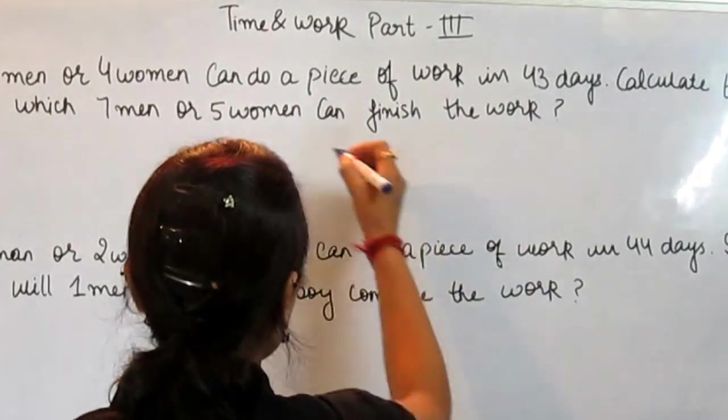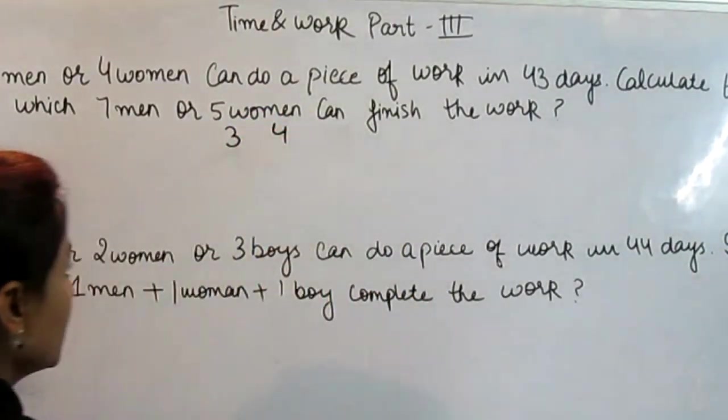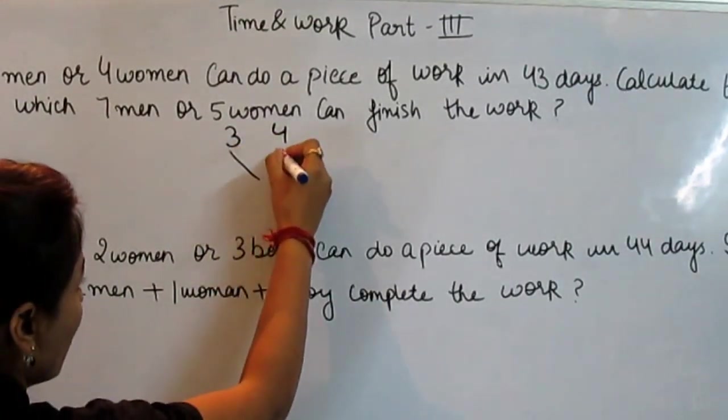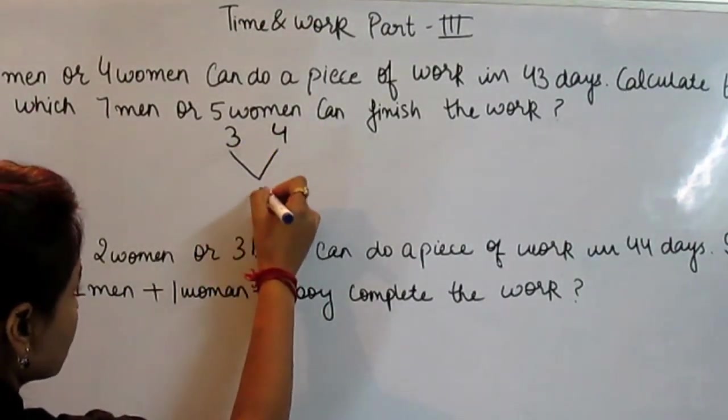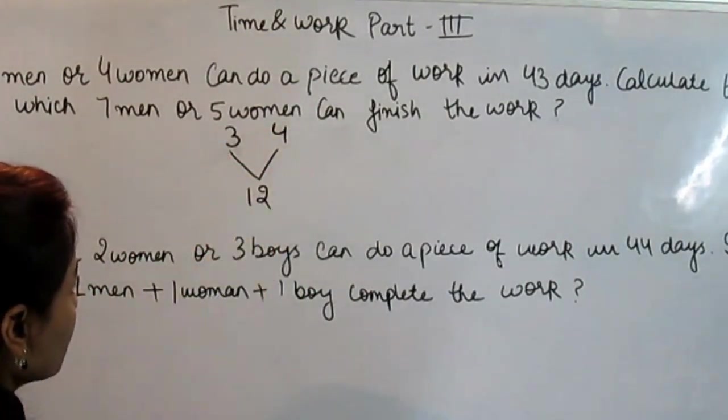We are given 3 men and 4 women. We always take the multiple of these two numbers. That is 12. 12 is the perfect multiple of 3 and 4.